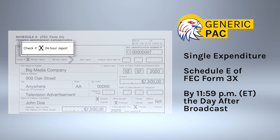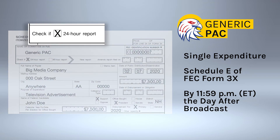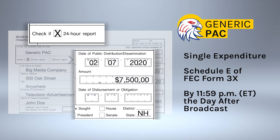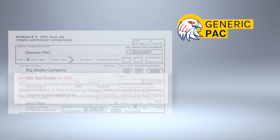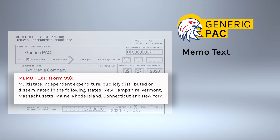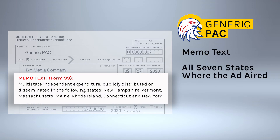The committee checks this box on the form to indicate that it's a 24-hour report. It also lists the date the ad ran and its total cost, and identifies New Hampshire as the state with the next primary. In addition, the committee includes memo text listing all seven states where the ad aired.